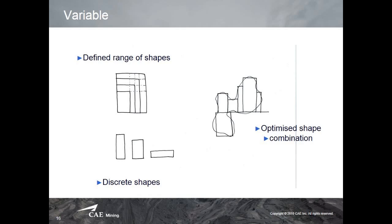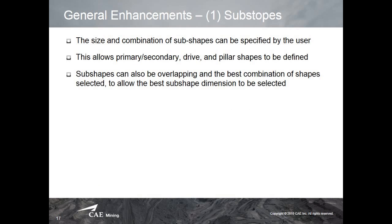The user will be able to define different sub-shapes, and the system will try to fit and optimize those shapes inside the stopes. The size and combination can be defined by the user, or you can leave the system to optimize the shapes automatically. Customized pillar shapes will also be available. If sub-shapes overlap, the system will calculate and determine the best one to generate as the final product.